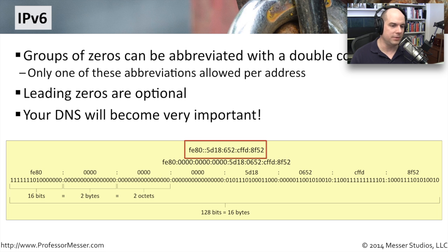fe80, a couple of colons, 5d18, colon, 652, colon. The colon is now taking the place of that decimal we were using before.